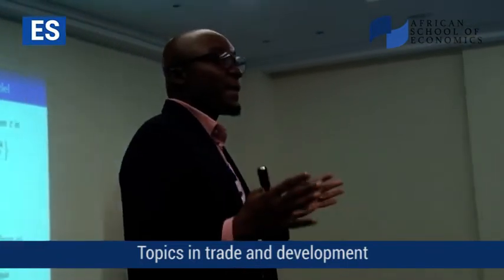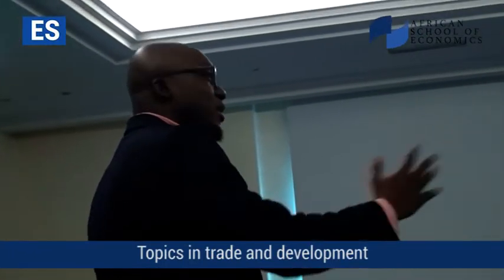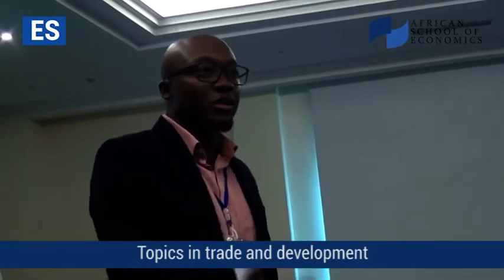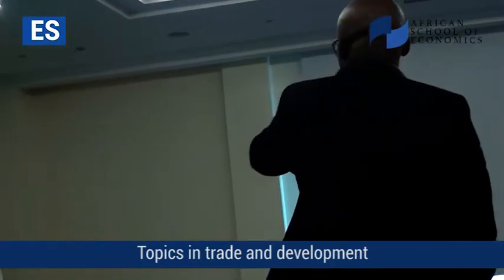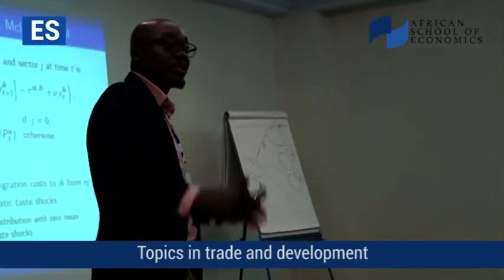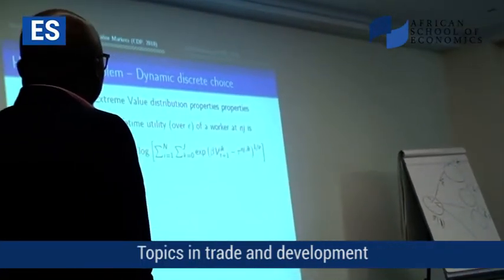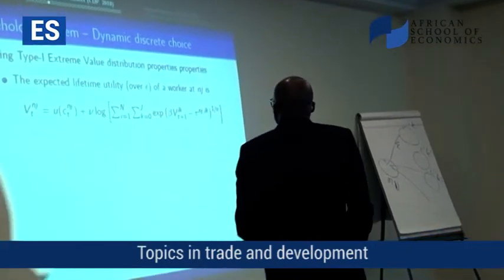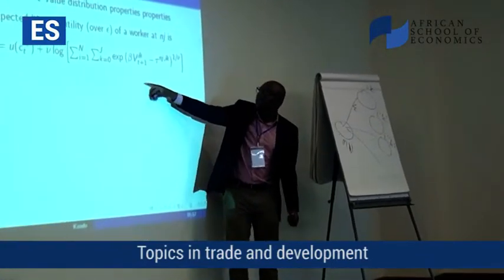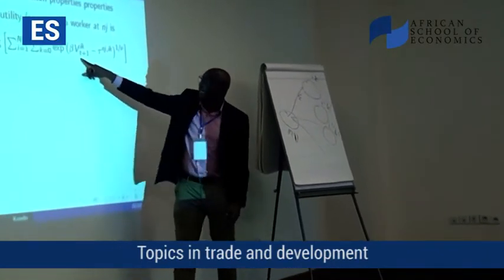Think of this as building block number one for thinking about trade and inequality. Simon told us a little bit about the trade side — industries, firms, marginal costs. This is a similar intuition: I'm going to have taus and epsilons and make those two things meet. If you work out the math, step number one is that because the epsilon is extreme-value distributed, you can basically get a closed-form expression.